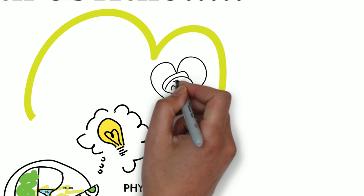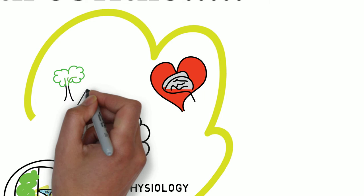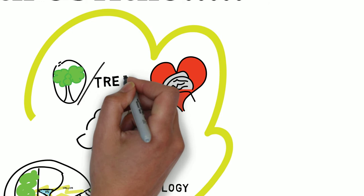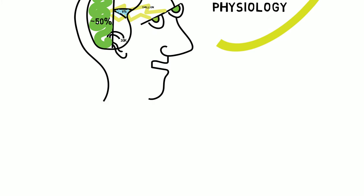The brain loves pictures. You're able to recognize the concept of a tree from an image versus the word tree 60,000 times faster.